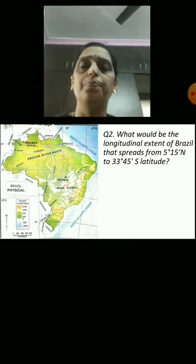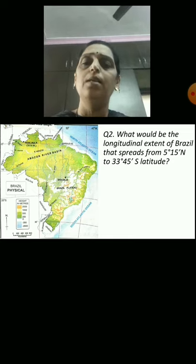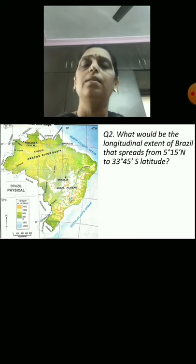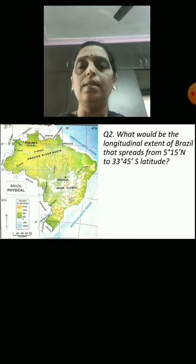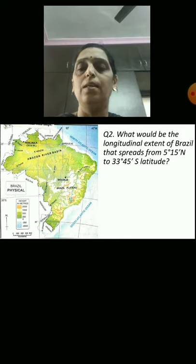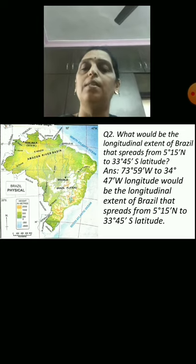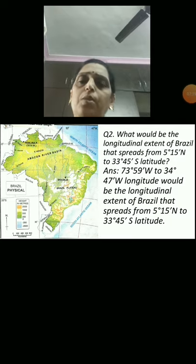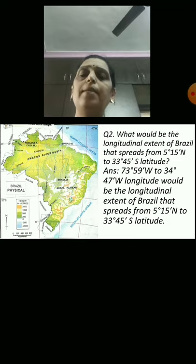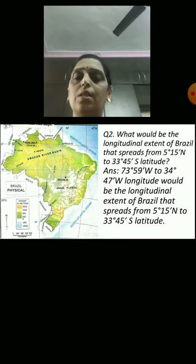Question 2: What would be the longitudinal extent of Brazil that spreads from 5 degrees 15 minutes north to 33 degrees 45 minutes south latitude? The answer is 73 degrees 59 minutes west to 34 degrees 47 minutes west longitude would be the longitudinal extent of Brazil.